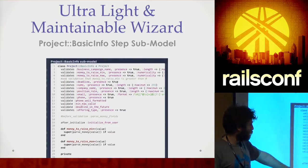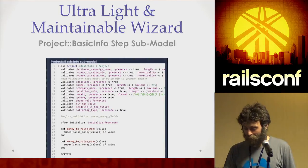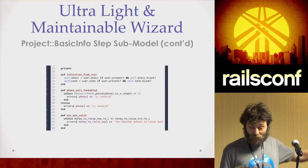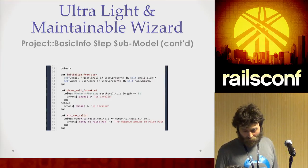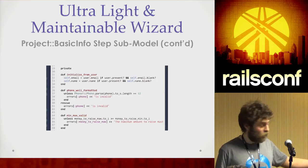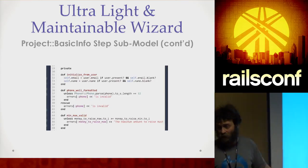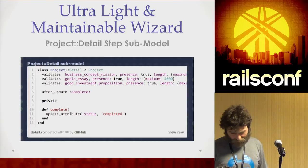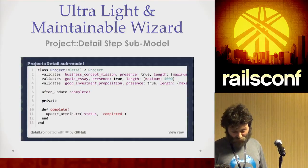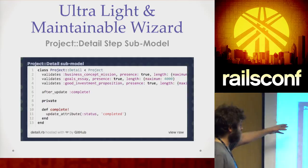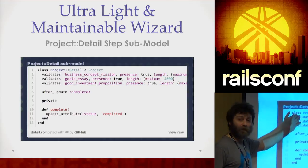These are validations for step one only — the first step — as well as some business logic related to it, like initializing defaults from the signed-in user. Then there's the project detail model which has a few validations — only three, because it only has three fields on it.